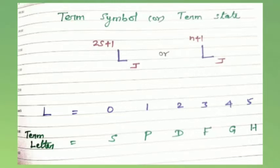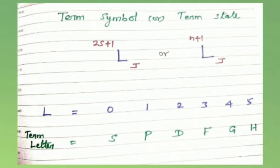Hi friends, welcome to my YouTube channel. In this video we will discuss about term symbol or term state. It uses the formula L-J with superscript 2S+1, where L is the total orbital quantum number, J is the total angular momentum, S is the total spin quantum number, and N is the number of electrons.